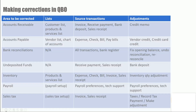Let's go over this in more detail. If we need to correct accounts receivable, the lists we may need to correct are the customer list and the products and services list. The source transactions affected by these lists are invoices, receive payment, bank deposit, and sales receipt. The adjustment we would make to fix most of these source transactions would be a credit memo to adjust accounts receivable.